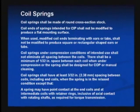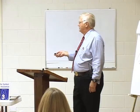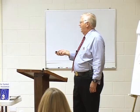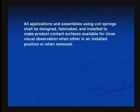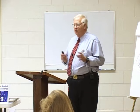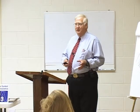Springs may have a point of contact at the end coils — obviously there has to be some touch point where you get the compression started — and occasionally on intermediate coils to keep the spring from cocking. There are some mechanical reasons why some of these intermittent contact points can be allowed. All applications and assemblies using coil springs shall be designed, fabricated, and installed to make product contact surfaces available for close visual inspection. We don't like springs in the product zone, so if you're going to put them in, we want to be able to see them and inspect them easily.